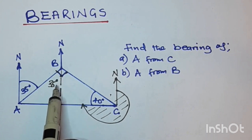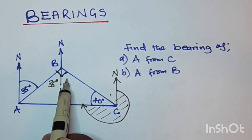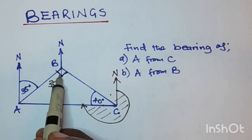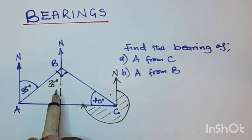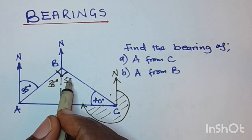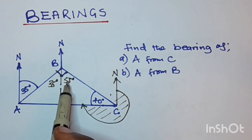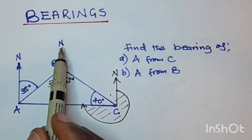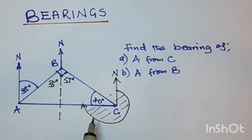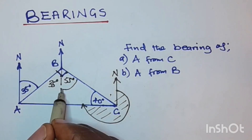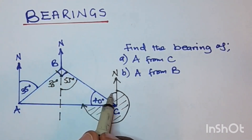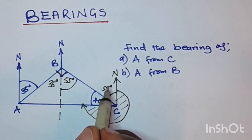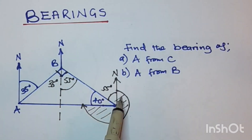This is a 90-degree angle, and out of 90 we have 35, so to find this angle here we say 90 minus 35, which gives 55 degrees. Now if you look at this north and this north, they are also parallel lines, so this angle A is going to be equal to this angle — alternate angles — so this is also 55 degrees.